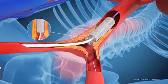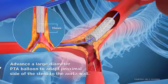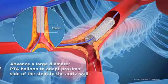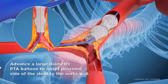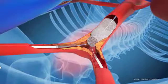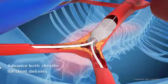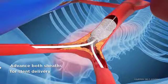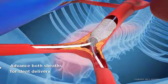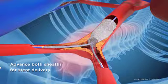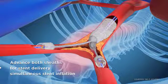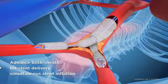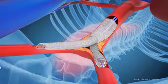The proximal portion of this covered stent is post-dilated to the same size as the aorta. Afterwards, two long sheaths are advanced through the aortic covered stent to place two covered stents in the iliac arteries simultaneously.